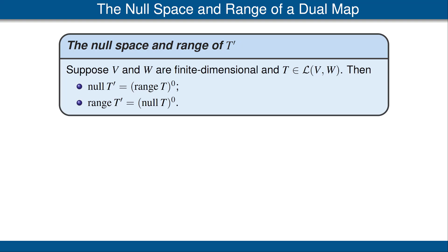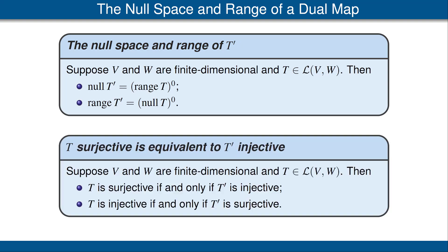Now let's turn to another interesting and very useful result. Again the setting is that V and W are finite dimensional vector spaces and T is a linear map from V to W. The result says that T is surjective if and only if the dual map T prime is injective. Furthermore, T is injective if and only if the dual map T prime is surjective.